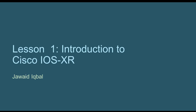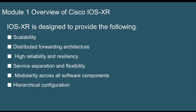Let's take a look at some of the components of IOS XR. In this lesson we're going to go through various components, starting with scalability — how scalable the IOS is — then the distributed forwarding architecture of IOS XR, the reliability and resiliency of the IOS, how it separates services and provides flexibility, how modular the IOS is, and finally the hierarchical config structure compared to IOS and IOS XE.